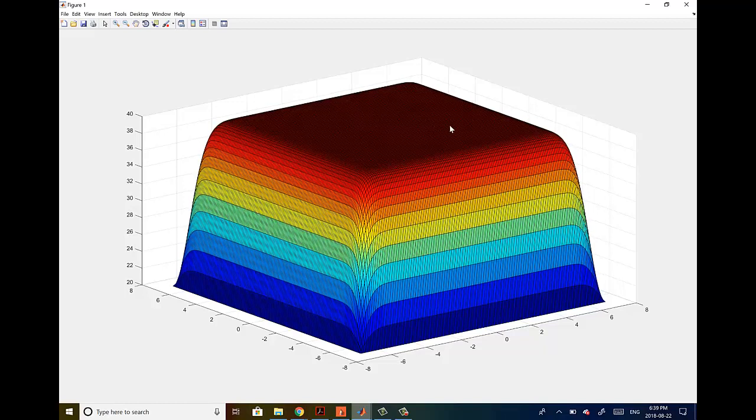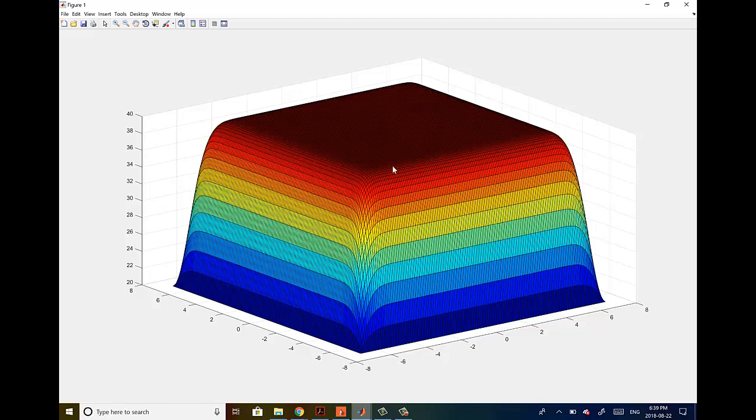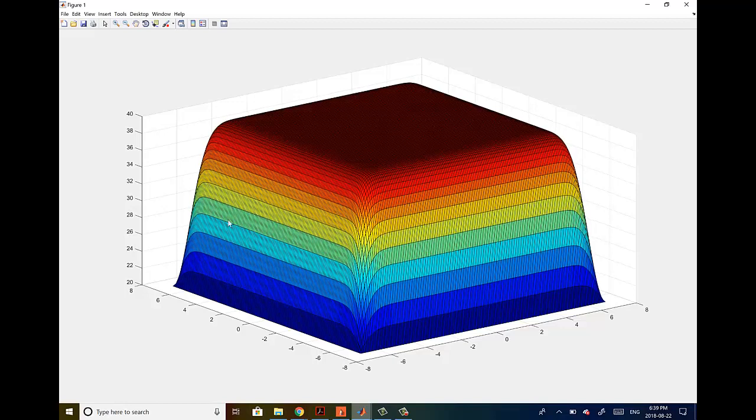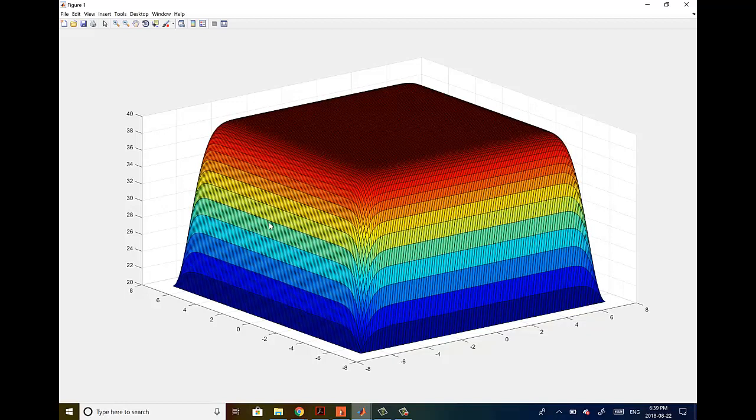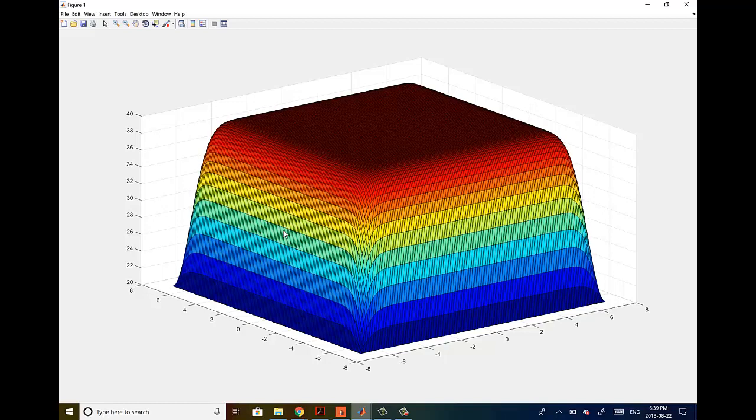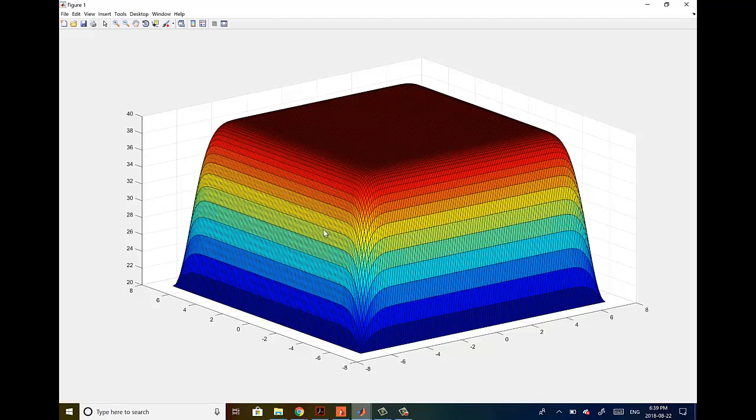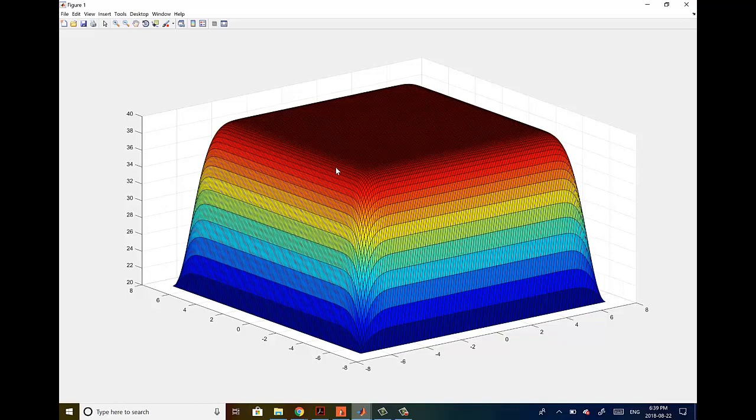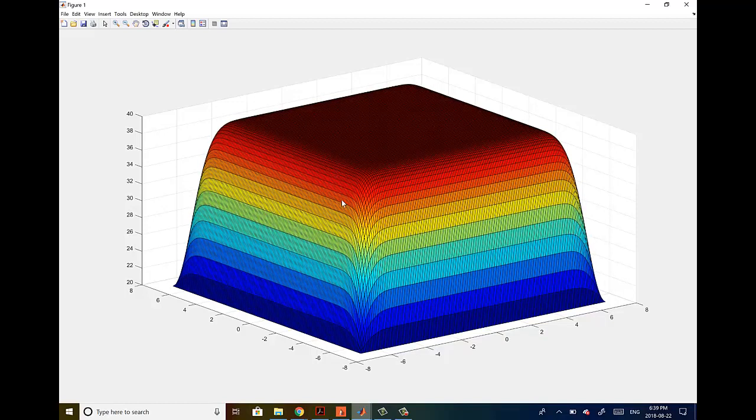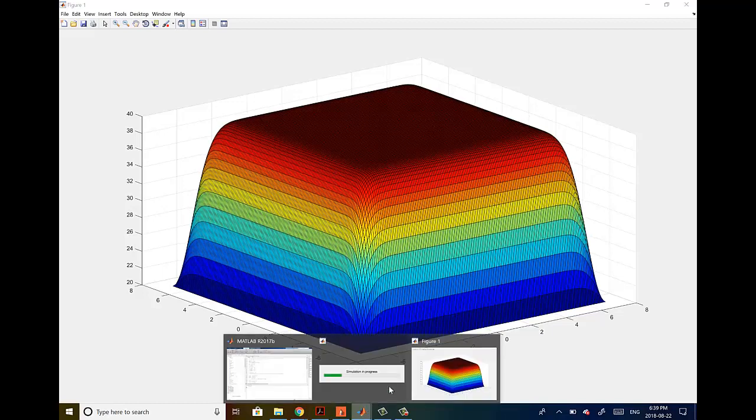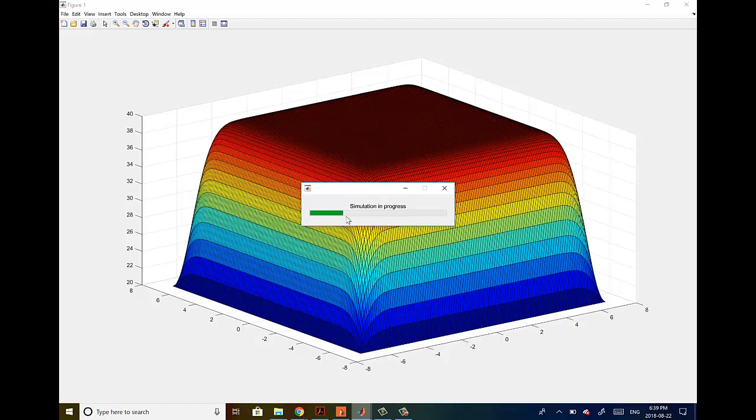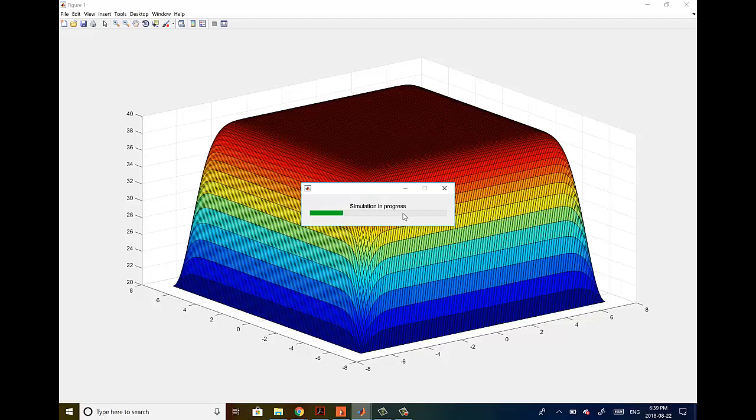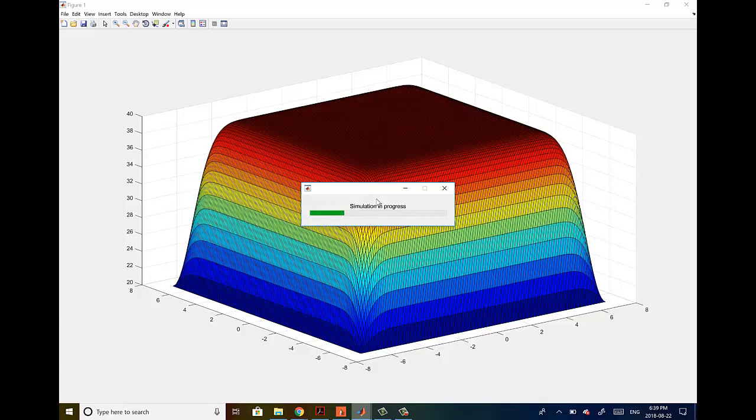Basically you can see this simulation progressing and everything is slowly getting colder and colder. It won't reach 20 Celsius, it won't reach the thermal equilibrium within the 10 second time frame probably, but eventually it would reach thermal equilibrium with the boundaries or with the outside environment. You can see the progress bar, it's slowly progressing, indicating how far the simulation has progressed.